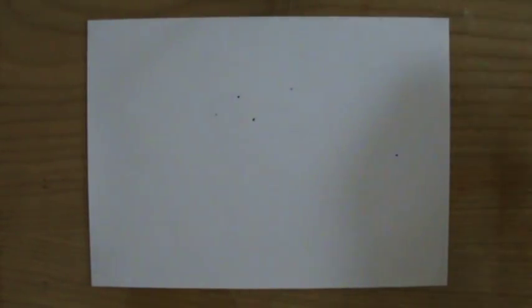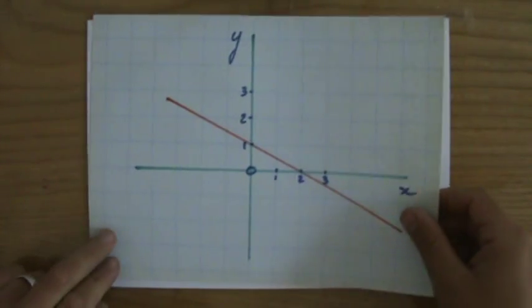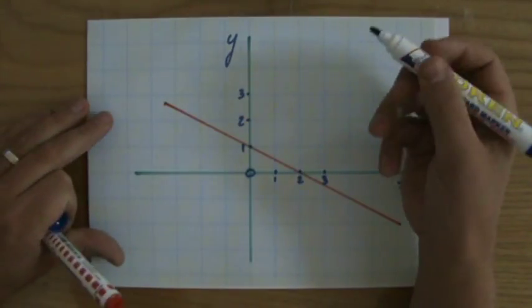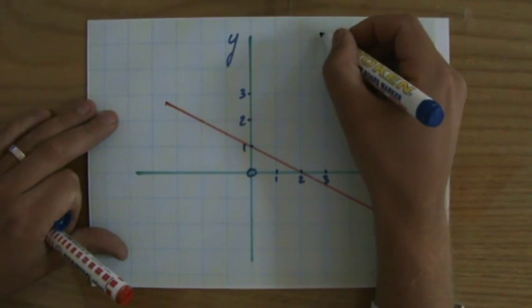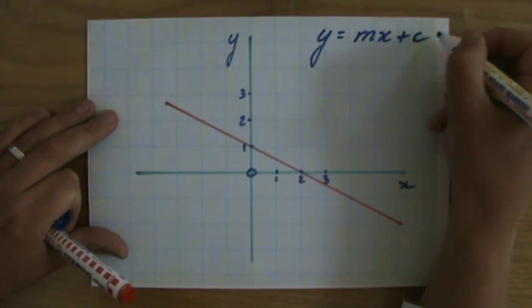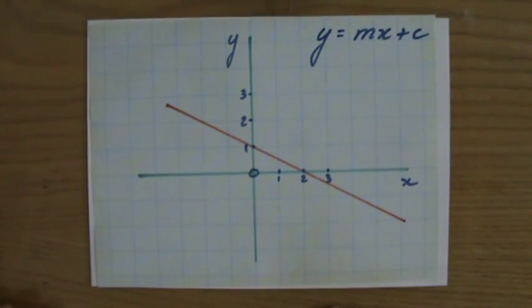Now I have to construct the equation of this particular line. And I immediately write down the general equation y equals mx plus c, the gradient intercept form. And all I do now is discover what the gradient of this line is and what the y-intercept is.